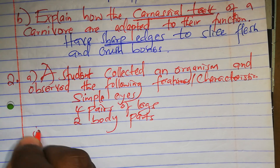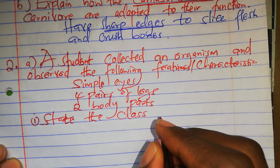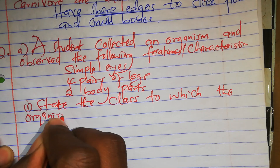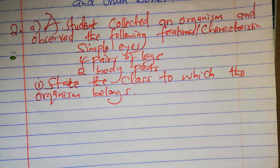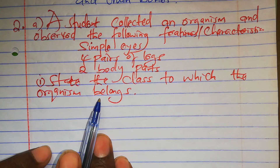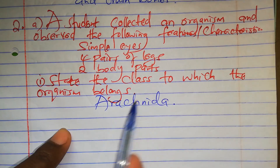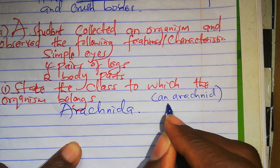State Roman 1: the class to which the organism belongs. This is classification from form three, where you looked at the two phyla of animals — Chordata and Arthropoda. This one sounds like Arthropoda. These characteristics belong to a class in phylum Arthropoda called Arachnida. The class is Arachnida; the organism is an arachnid.